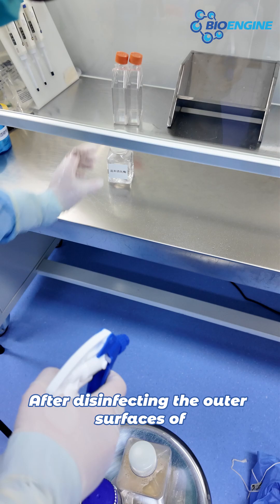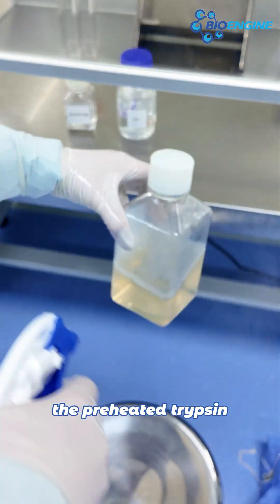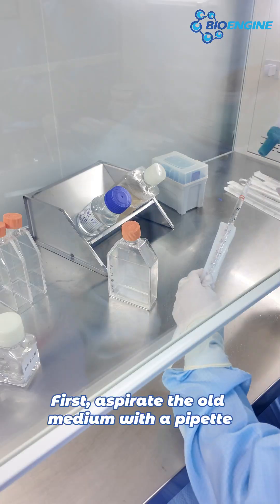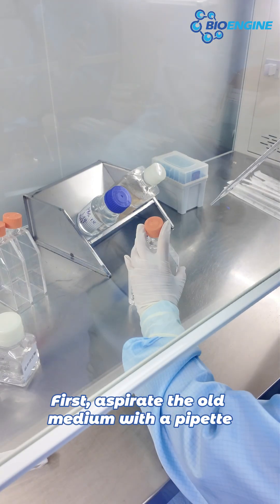After disinfecting the outer surfaces of the preheated trypsin, medium, and PBS with alcohol, place them in the clean bench. First, aspirate the old medium with a pipette.